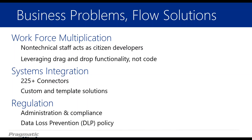The systems integrated with Flow include 225-plus connectors, and that's growing all the time. Those connectors are the different ways that Flow leverages services — be they Microsoft like O365, Dynamics, SharePoint, MailChimp, Outlook, or a myriad of other connections. You also have custom and template solutions — you can jump into Flow, grab a template that's already built, sign in, and go. Or you can build a custom solution very easily. You can also generate administration and compliance with Flow, and there is a data loss prevention policy in place.